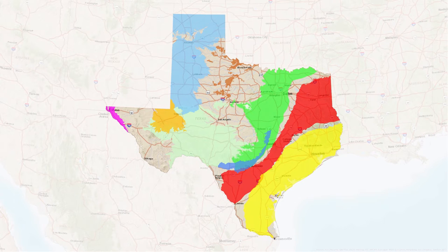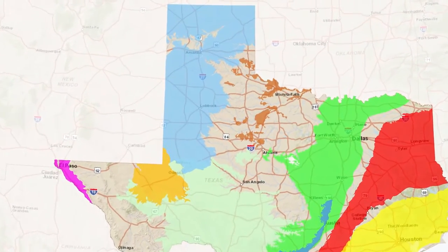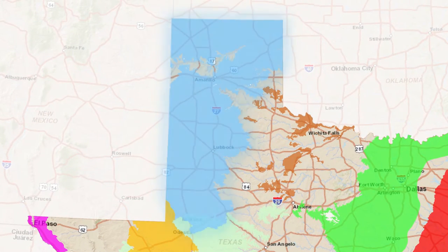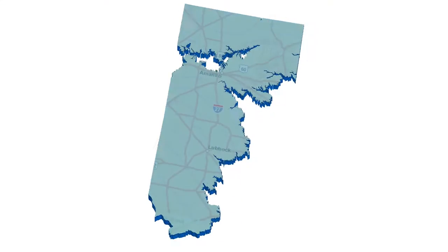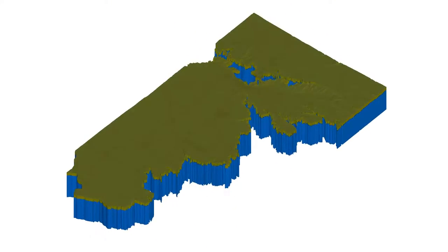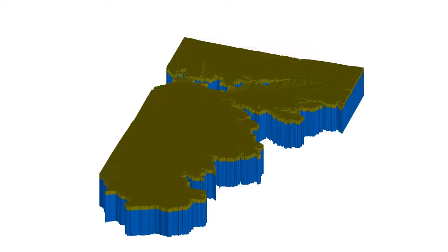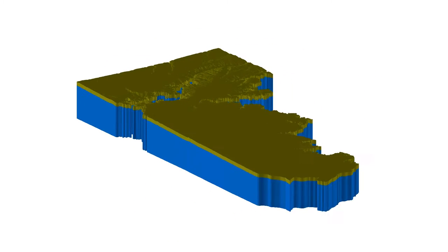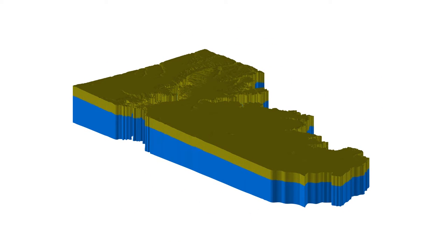The Ogallala Aquifer is located in northwest Texas and extends northward into Kansas and Nebraska. Since people began tapping its groundwater, the aquifer has dropped an average of 105 feet. This is an example of an aquifer being steadily depleted by pumping.